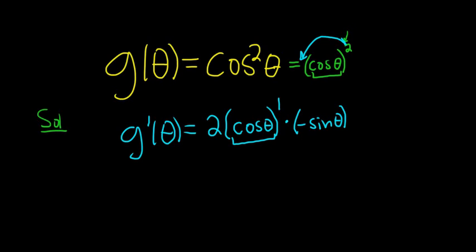So again, you take the 2, you put it in the front, don't touch the inside, you leave it alone. 2 minus 1 is 1, and then you multiply by the derivative of the inside. That's the chain rule.